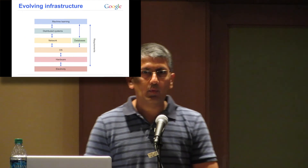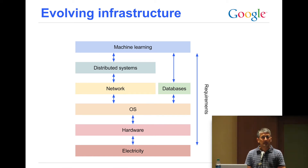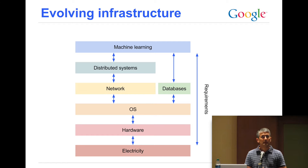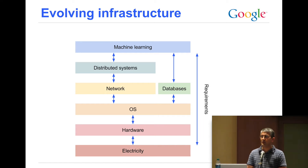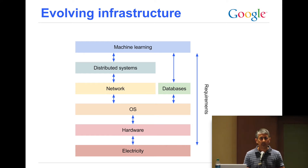Before I talk about machine learning, I want to spend a few minutes reflecting on computing infrastructure. When an application developer develops an application, they expect to have something available to them in the infrastructure layer. Many years ago, that infrastructure was probably just electricity. But then over time, we started standardizing our expectations for computing hardware — today you expect a CPU, RAM, and hard disk. Then we started standardizing our expectation on operating systems, and then databases and networks also became part of this computing infrastructure.